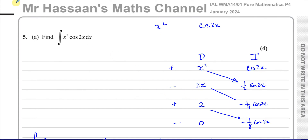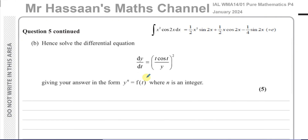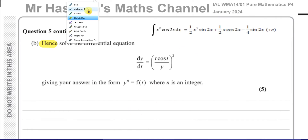Now for part B. It says: hence solve the differential equation dy/dt = (t cosine t) / y², giving your answer in the form y^n = f(t), where n is an integer. We have to solve this differential equation, and 'hence' means we're going to have to use our earlier result somehow — I've written it up in case we need it.